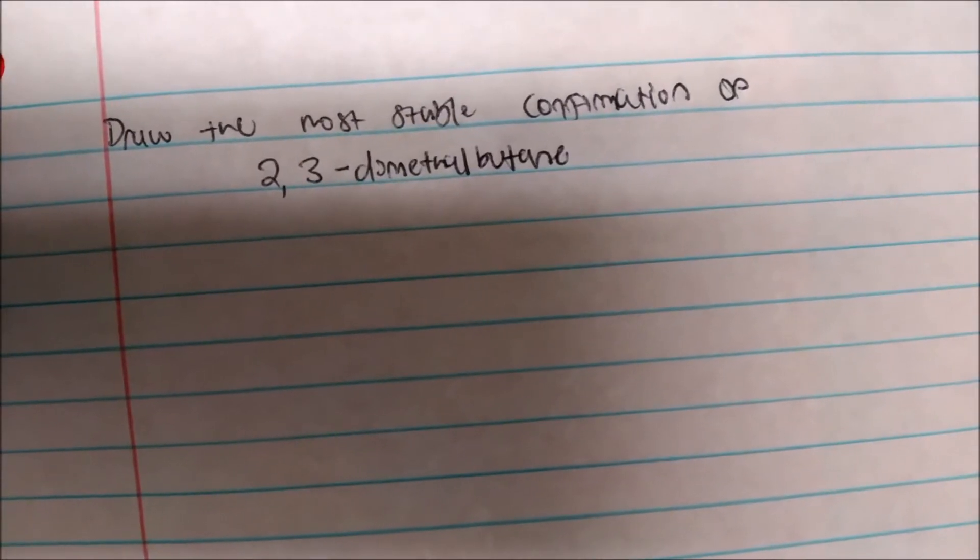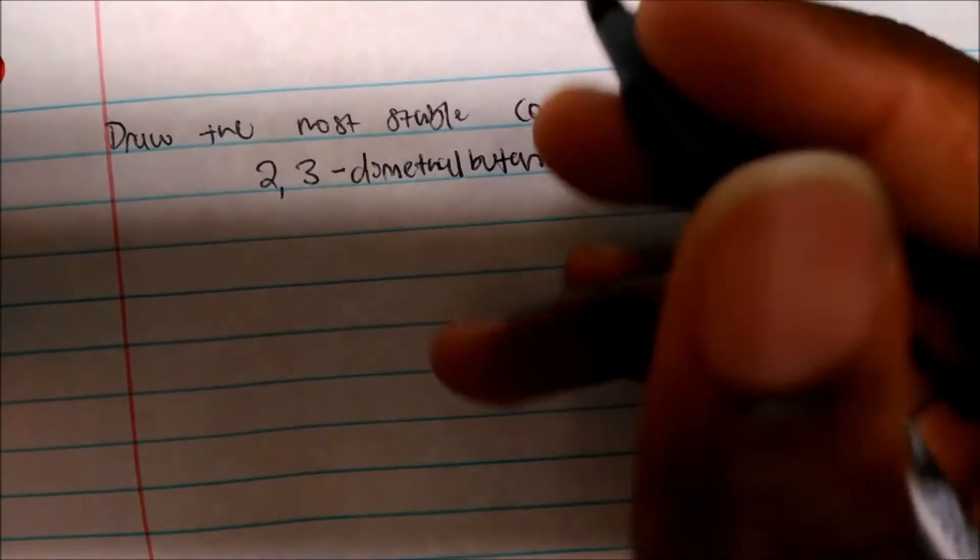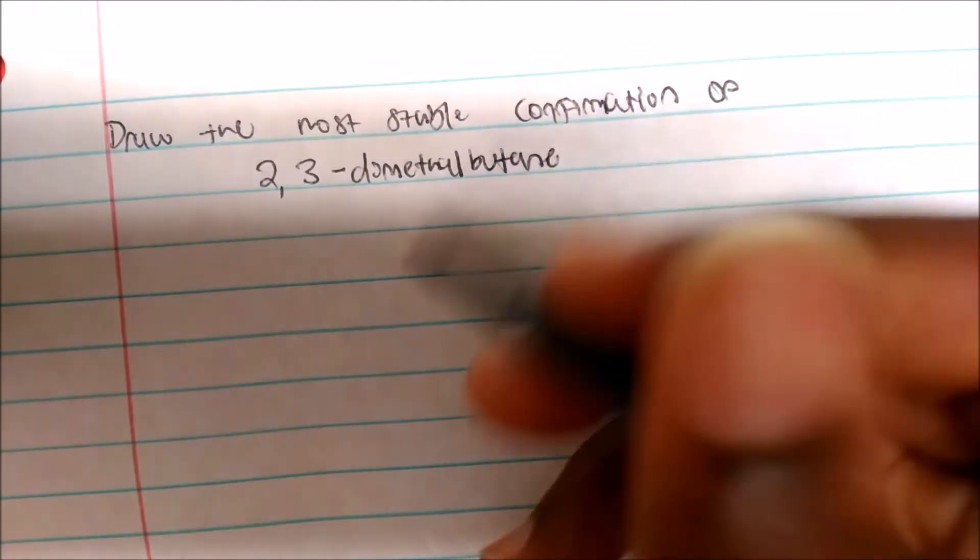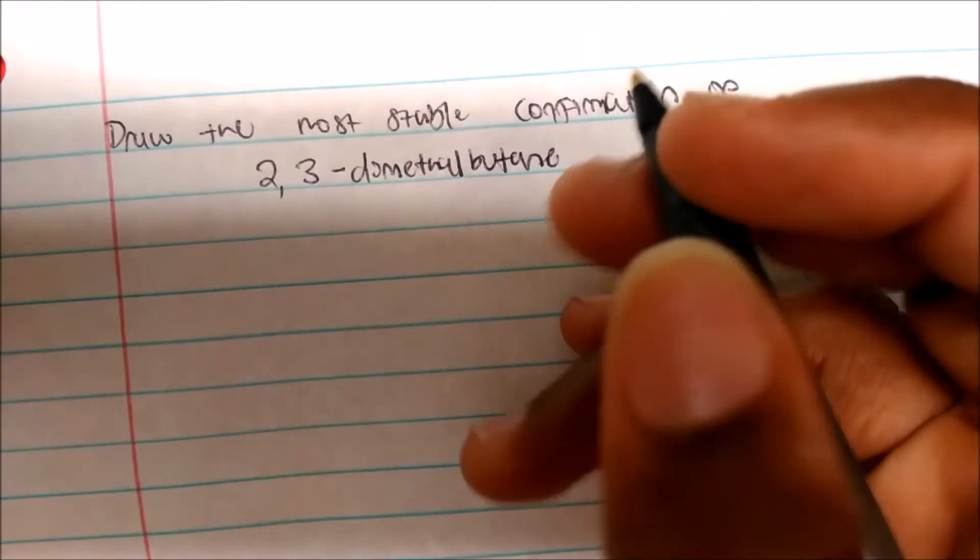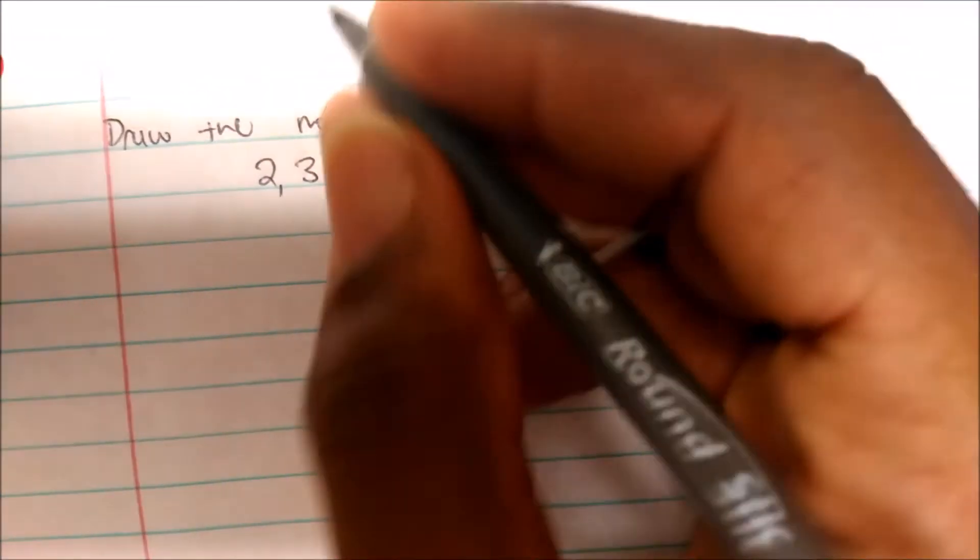So, drawing the most stable Newman conformation of 2,3-dimethylbutane. Again, the first thing you want to always do is start with the bond angle structure. And you could also start with lowest structure, who cares, right?